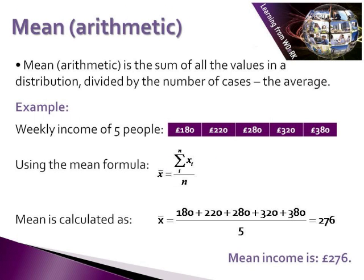Looking at each measure in a little more detail: the mean, or the average, is the sum of all the values in a distribution divided by the number of cases. In this example, we have the weekly income of five different people, ranging from 180 up to 380. Using the formula shown, we simply add up all of those incomes and divide by five, which gives us an average income of 276.